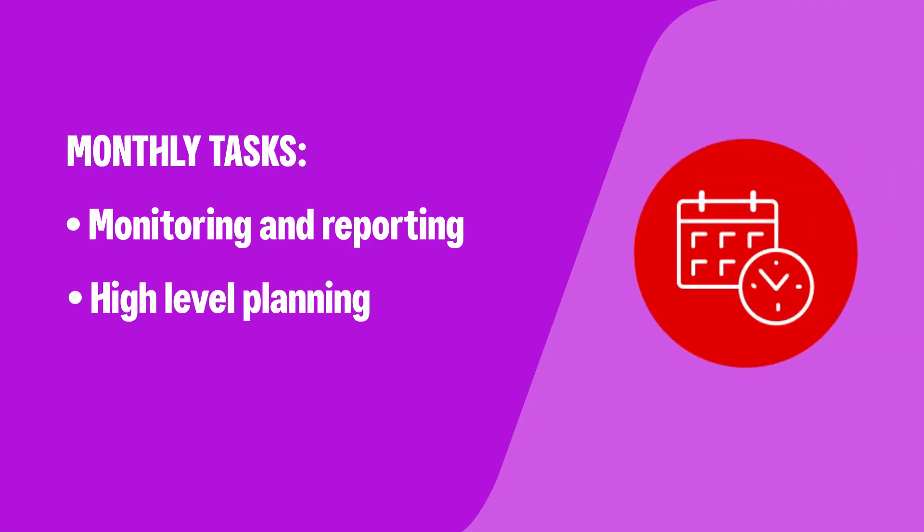Some of your monthly tasks could include monitoring and reporting. Once a month is a great time to stop and reflect on how you track against your key objectives. Review the performance of your recent posts and track key metrics such as reach, engagement, click-through rates, and conversions to assess the effectiveness of your content. We'll discuss this in more detail in the next module.